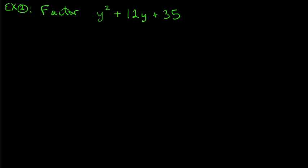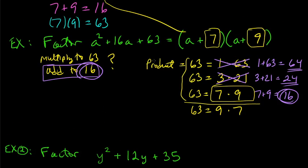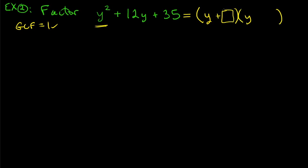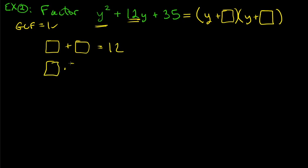Let's try another example: factor y² + 12y + 35. Ignoring that it's a y instead of x — the variable doesn't matter. GCF is 1, only three terms. We're looking for (y + ☐)(y + ☐) where the two numbers add to 12 and multiply to 35. The possibilities are 1 × 35 (sum = 36, no) and 5 × 7 (sum = 12 — match!). So the answer is (y + 5)(y + 7).